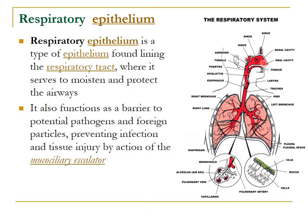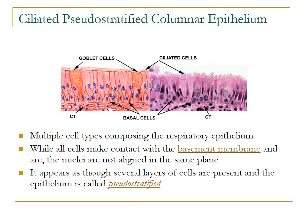The respiratory tract is lined by an epithelium called the respiratory epithelium. This is a special type of epithelium lining the respiratory tract; it serves to moisten and protect the airway and also functions as a barrier against potential pathogens and foreign particulate matter, preventing infections and tissue injury by the action of the mucociliary escalator. This respiratory epithelium is actually a pseudostratified ciliated columnar epithelium.